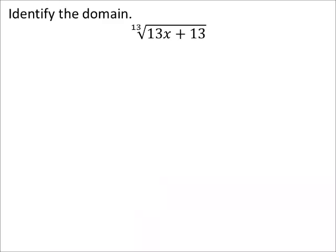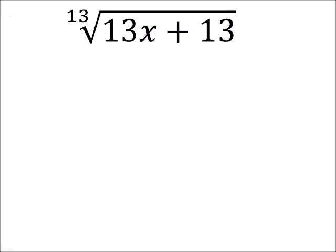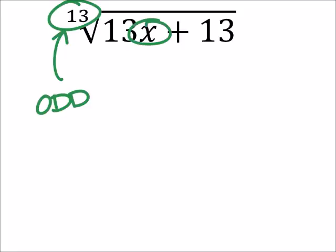Find the domain on this one. The index is 13, which is odd, which means that we can have an odd number of negatives. So X right here, it doesn't matter what it is — it will always give us some real solution. So X is any real number.